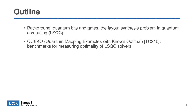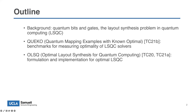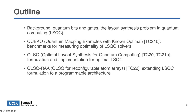I will first introduce some background on quantum bits and gates, then introduce the problem called layout synthesis in quantum computing, LSQC. Before going into how to solve it, we first want to probe how good current solvers are, so we invented a benchmark called QECO for measuring optimality of LSQC solvers. The third line of work, called OSQC, formulates this problem into optimization problems and invokes existing solvers. Finally, I'll briefly introduce new work to be presented at ICCAD this year about OSQC for reconfigurable or programmable architecture implemented with atom arrays.